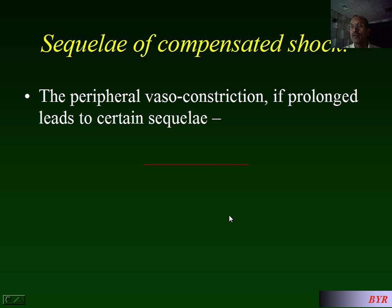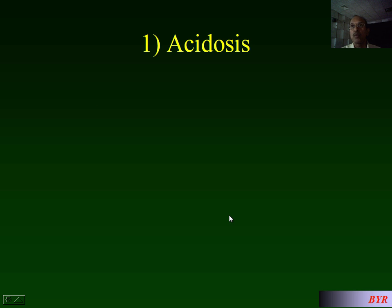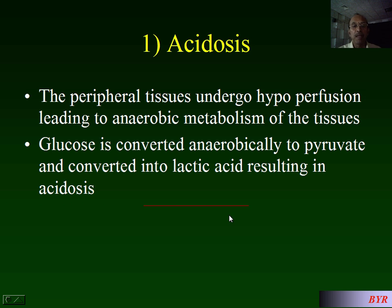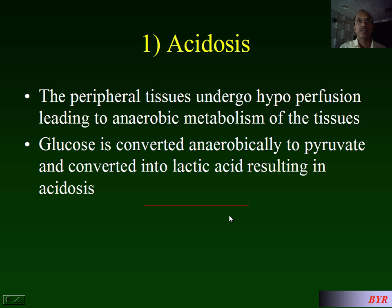The most important sequela is acidosis. The peripheral tissues undergo hypoperfusion, leading to anaerobic metabolism. Anaerobic metabolism leads to pyruvate production, which is converted to lactic acid, resulting in lactic acidosis.